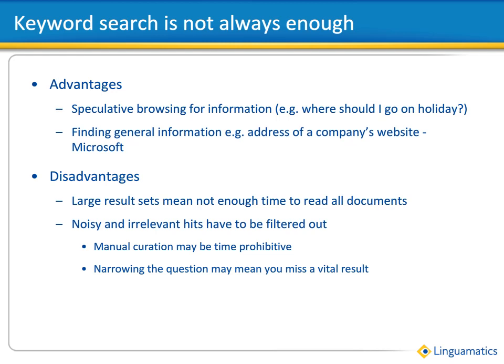To make sure you get good recall and find all the results you are interested in, you typically have to type in all the various ways a word may be expressed in the text. For example, cancer may be found as carcinoma, tumour, or neoplasm. When something can be expressed in tens, hundreds or even thousands of different ways and you have to type them all in, it becomes unwieldy and impractical.